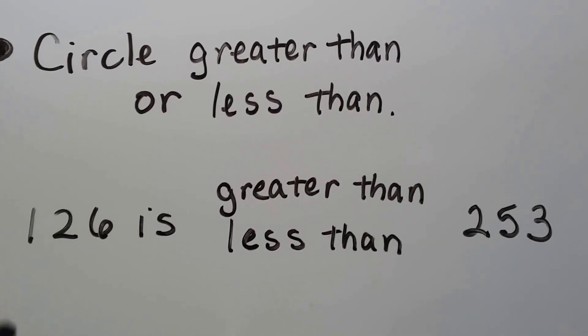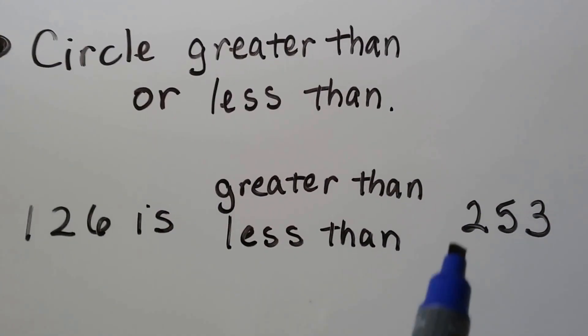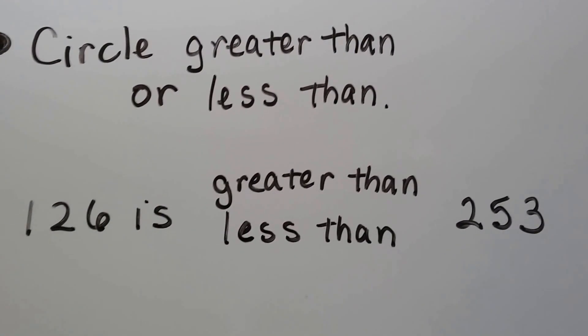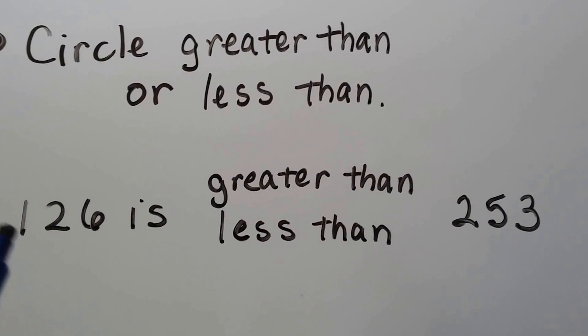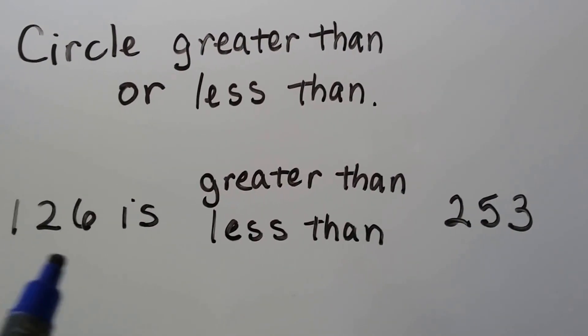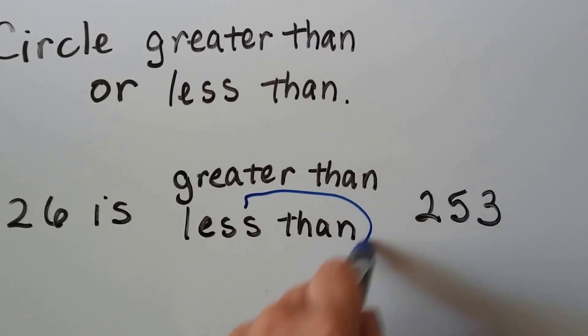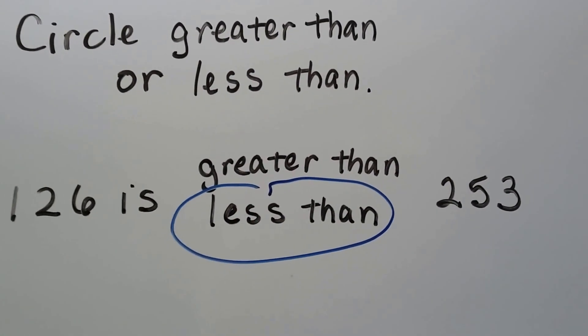Look at the hundreds place. This has 100, that has 200. So this is less — it doesn't have as many hundreds. So 126 is less than 253.